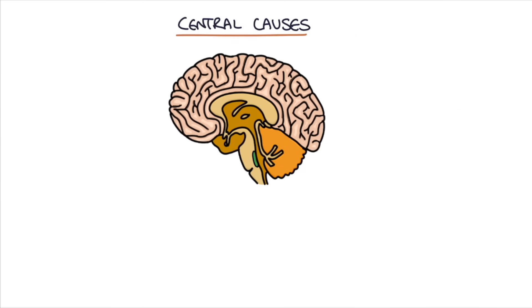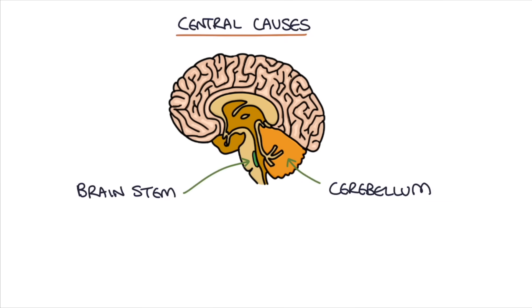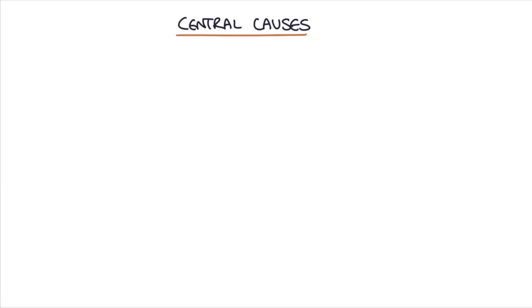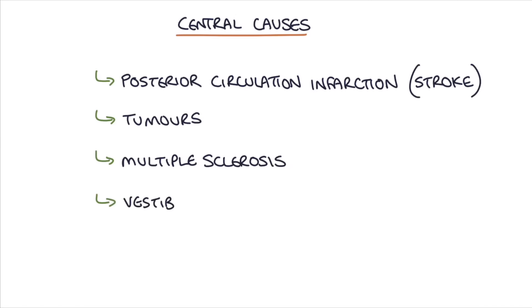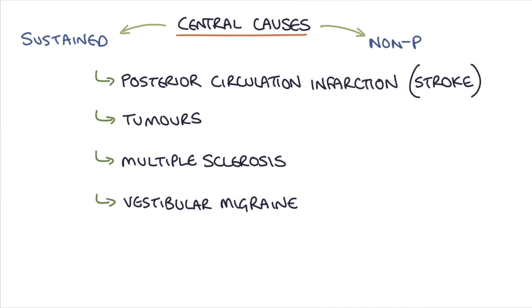Pathology affecting the cerebellum or the brain stem disrupts signals from the vestibular system and causes vertigo. The most common central causes include posterior circulation infarction, tumours, multiple sclerosis and vestibular migraine. All central causes of vertigo will cause a sustained non-positional vertigo, because they are caused by disruption to the interpretation of signals within the central nervous system itself rather than disruption to fluid movement within the semicircular canals.